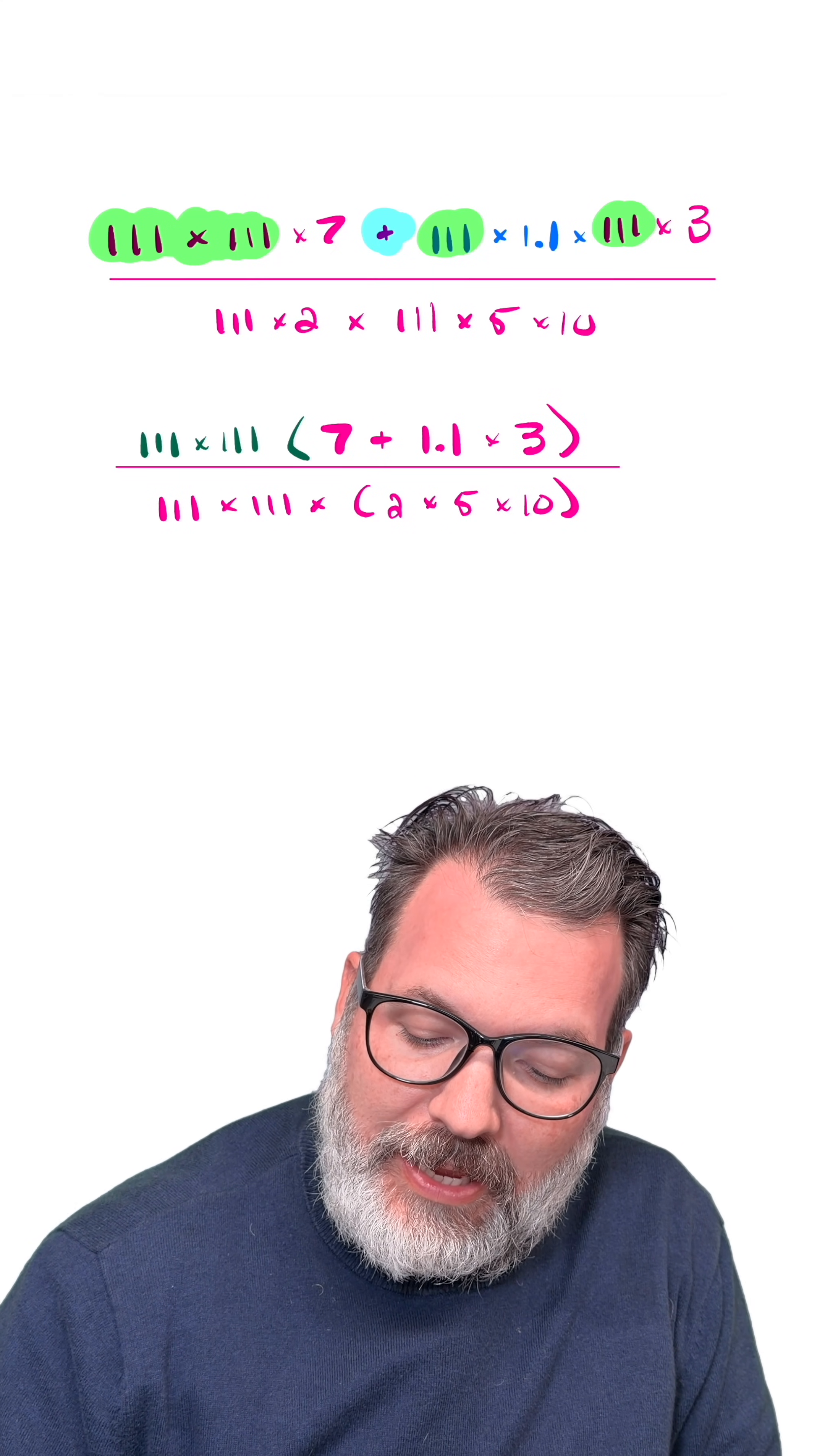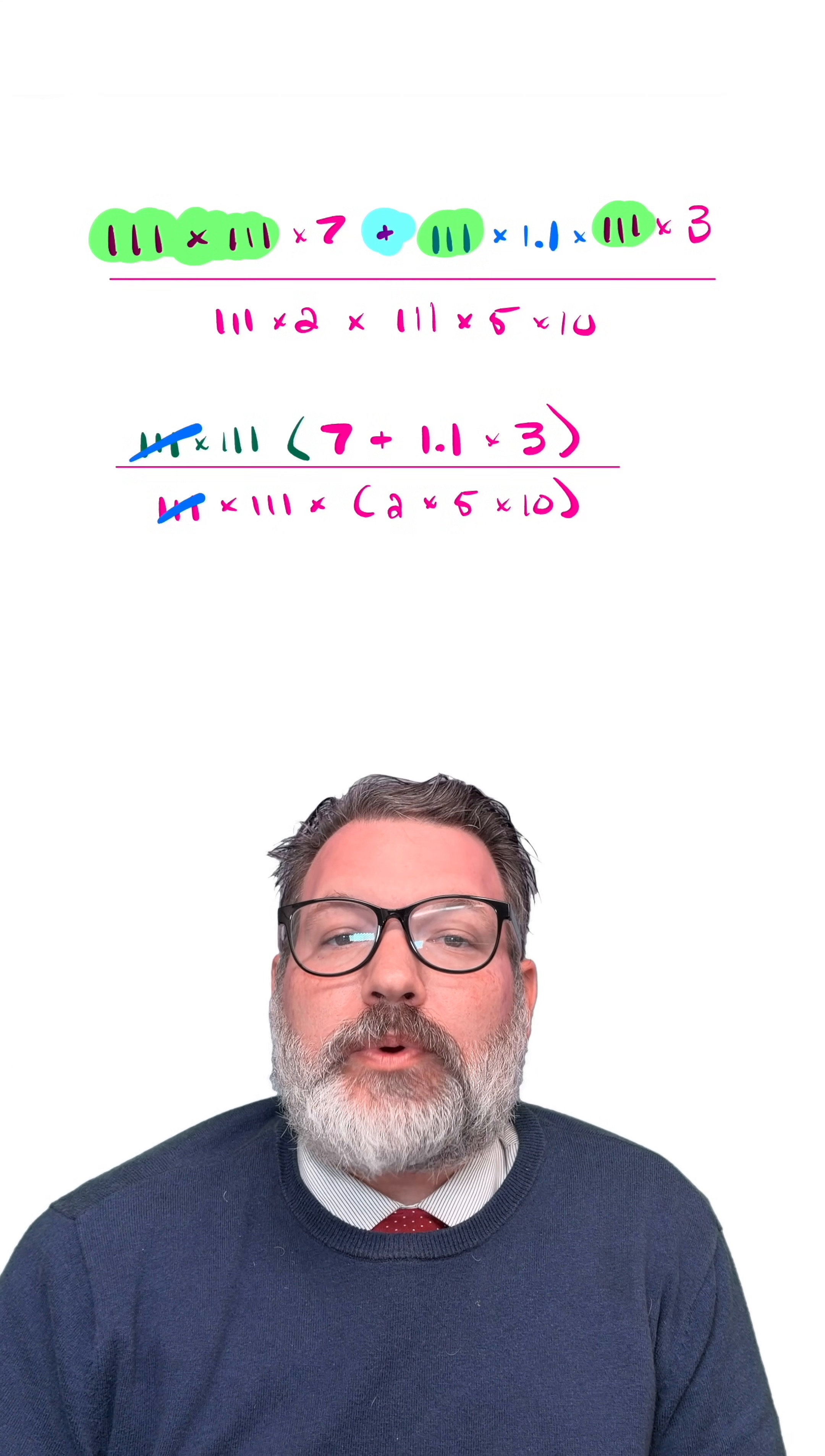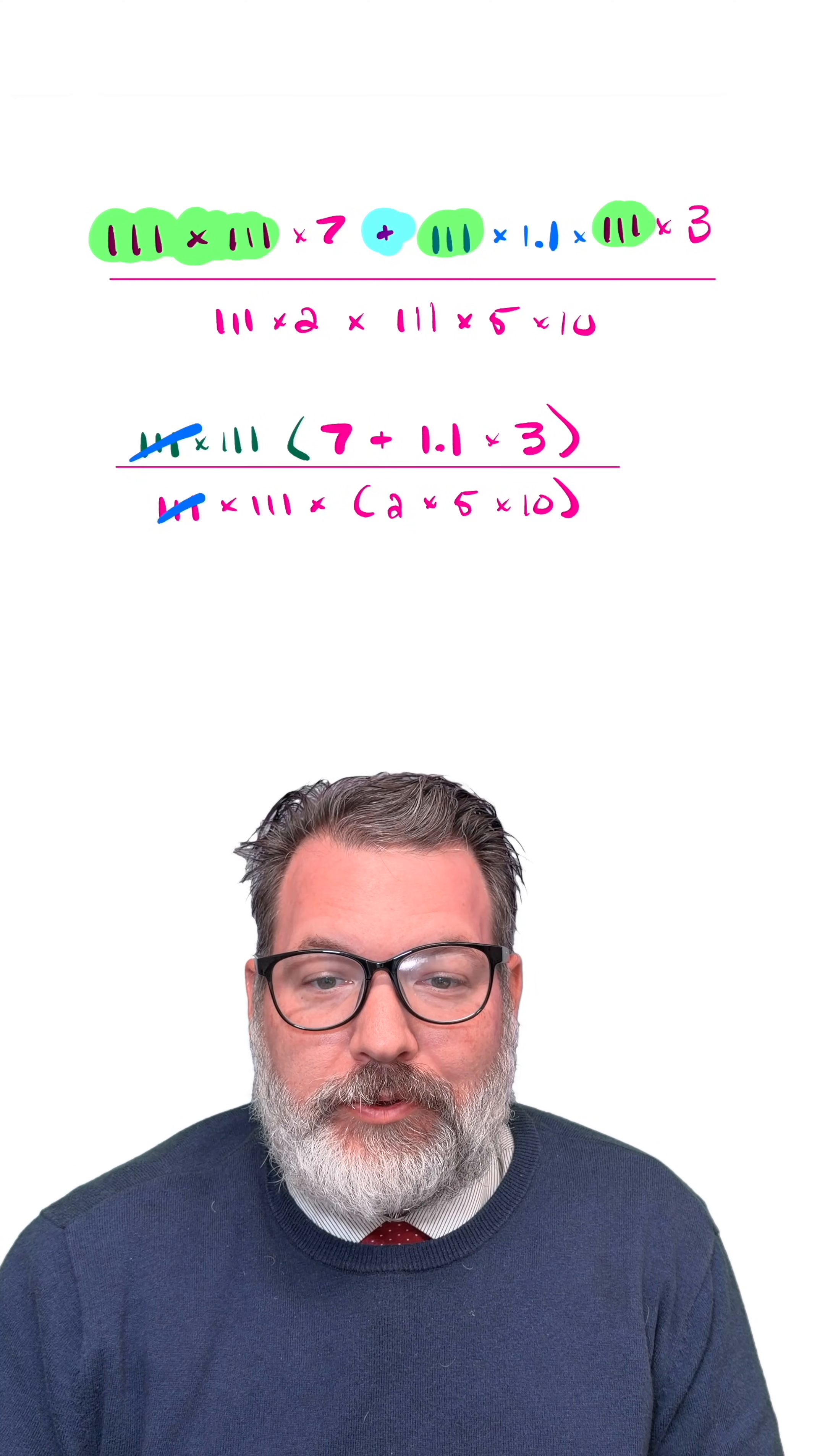From here, we can cancel our common 111s. Now, I know some people have a problem with the idea of canceling, so let's just say that what we're really doing here is recognizing 111 divided by 111 is 1, and multiplying stuff by 1 doesn't change its value.